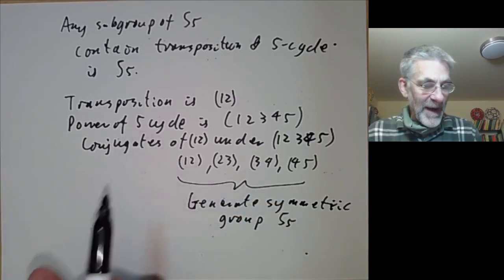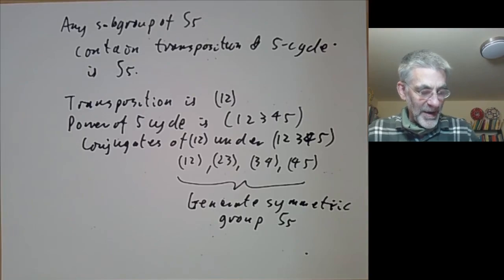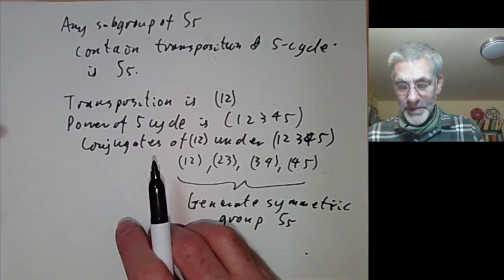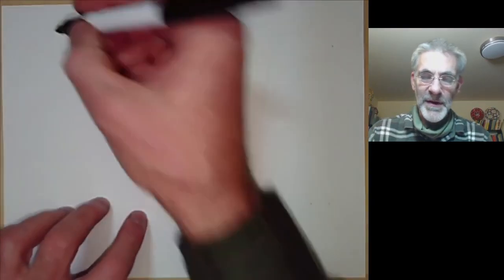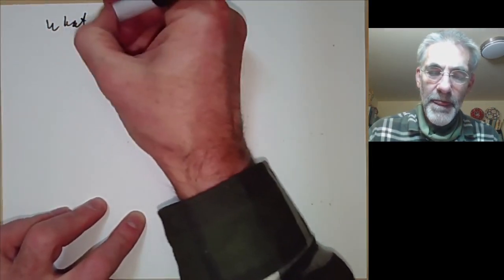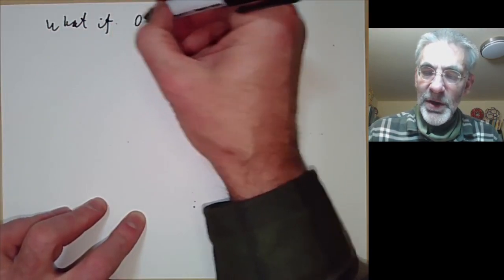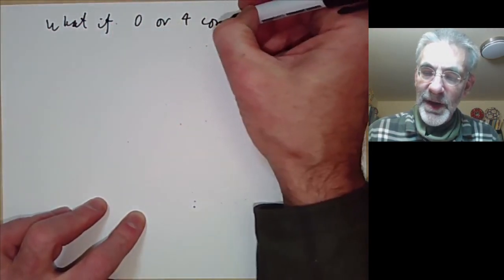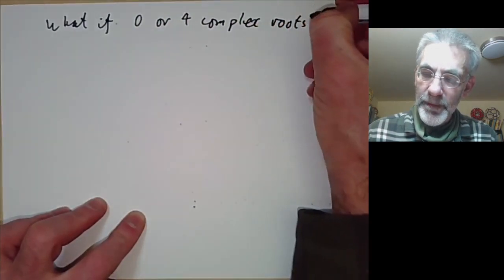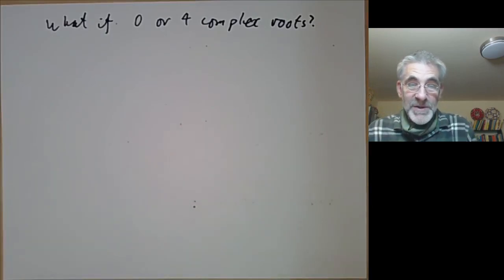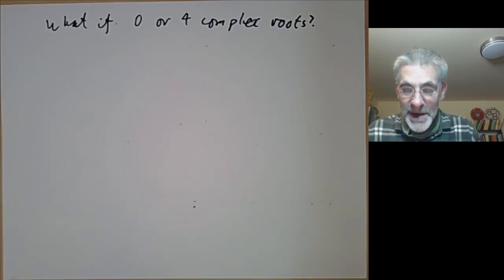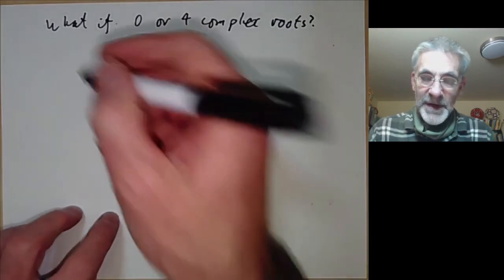So we've found an explicit polynomial over the rationals that can't be solved by radicals. Regarding the condition that there are exactly two complex roots — it actually is essential. We can ask: what if there are 0 or 4 complex roots? In those cases an irreducible fifth-degree polynomial might indeed be solvable by radicals.